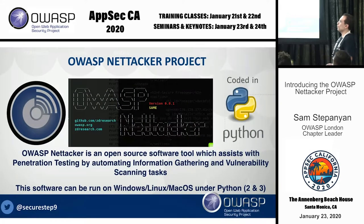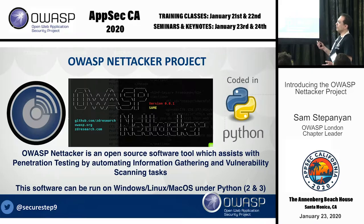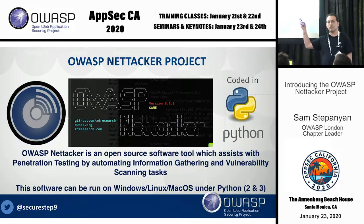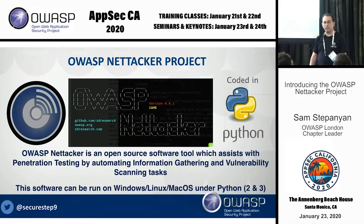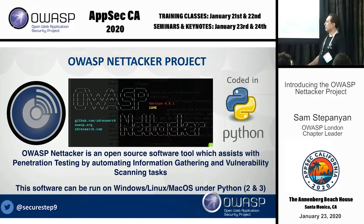What is OWASP NetAttacker? Just like all OWASP projects, it is open source software. It's written in Python, and its main goal is to help penetration testing, bug bounty, and vulnerability scanning tasks, because it allows you to automate information gathering and vulnerability scanning. It supports both Python 2 and Python 3, and because of that it can run on anything — Mac OS, Windows, Linux, or anything which supports Python.